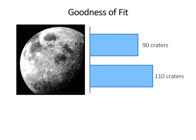Let's imagine a scenario where you identify 200 craters on the moon and find that 90 are in the northern hemisphere and 110 are in the southern hemisphere. You might ask if the crater distribution is random, or if that 110 in the southern hemisphere is an unusual concentration. To test for goodness of fit, we need an expectation — we need to compare our observations to an expected frequency.